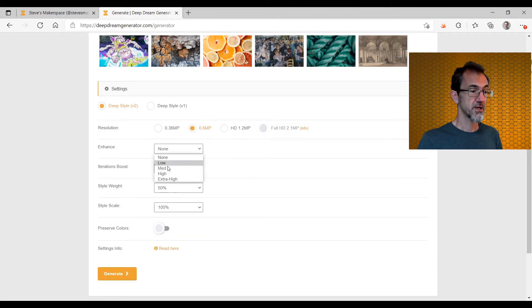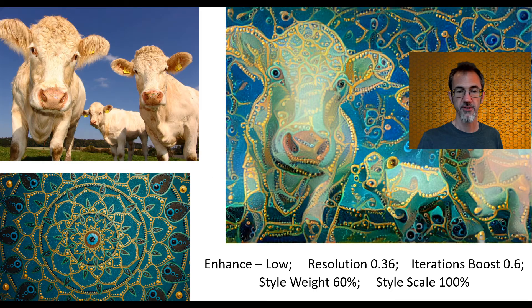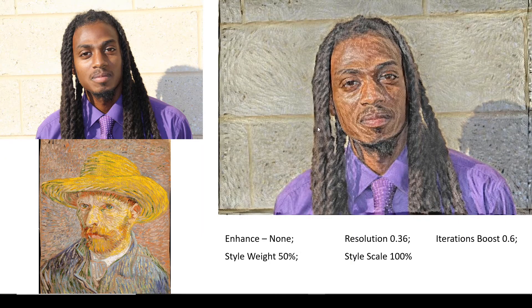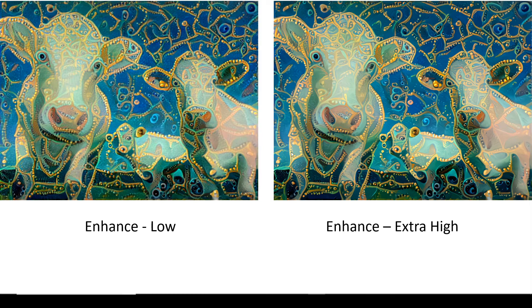Enhancement options are: none, low, medium, high, and extra high. I'll give you a couple of examples — here are my cows with certain settings, and also this fellow I made from another style. With low enhancement versus extra high enhancement, you get a lot more detail. You can see in the ears it's more defined — like little balls — compared to the blurry version. You can also see more definition in the nose of the cow compared to the softer version.